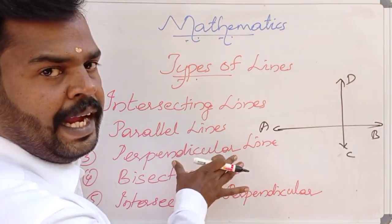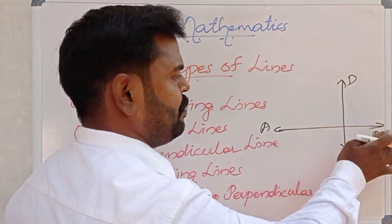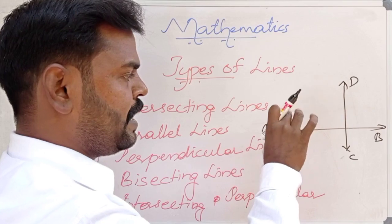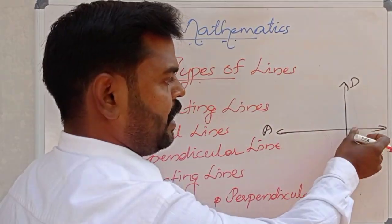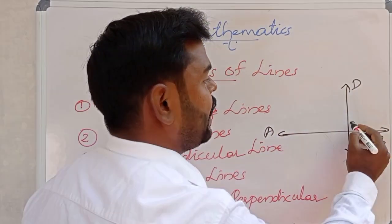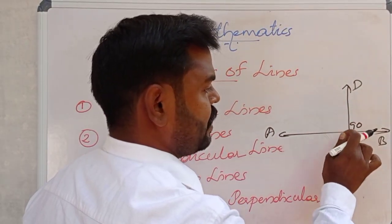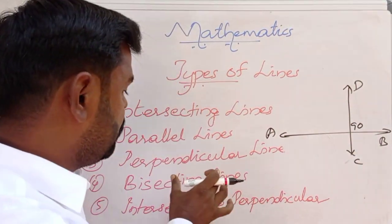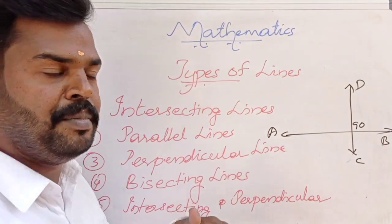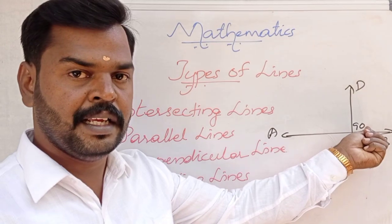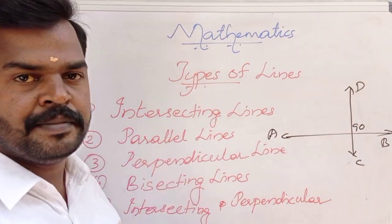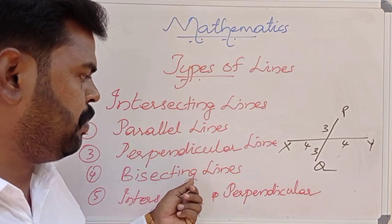Now let us discuss perpendicular lines. Here one line AB and next line CD — these two lines intersect at a point, and they make an angle of 90 degrees. Here 90, here 90, here 90, here 90 — all four angles are 90 degrees. So perpendicular lines are two lines that intersect and make angles of 90 degrees.